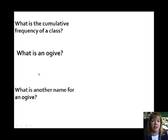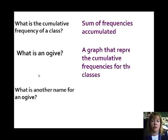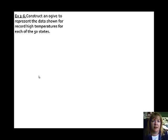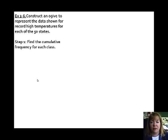What is the cumulative frequency of a class? The sum of the frequencies accumulated up to that class. What is an ogive? It's a graph that represents those cumulative frequencies and classes. Another name for the ogive is the cumulative frequency. So here we go. We're on to our next example. It says construct an ogive to represent the data shown for record high temperatures. Again, record high temperatures.